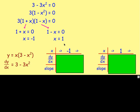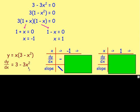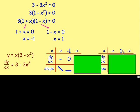Here is the nature table. We have one nature table for negative 1 and a separate one for 1. Pick a number just before negative 1, like negative 2, and sub it into dy/dx. Negative 2 squared gives 4, times 3 gives 12, and 3 take away 12 is negative — meaning the graph slopes down. At negative 1, you get 0 as expected. Putting in 0 gives 3 minus 0, which is positive — the graph slopes up. So at x equals negative 1, that is a minimum turning point.